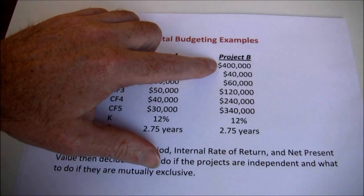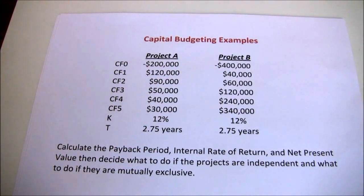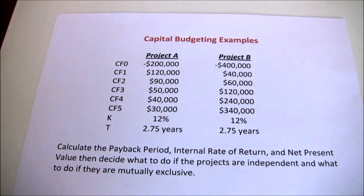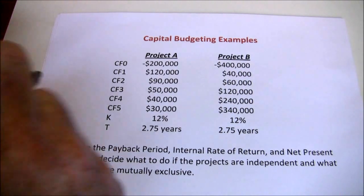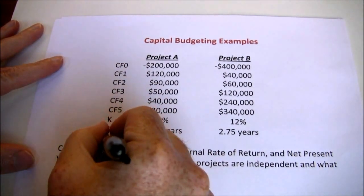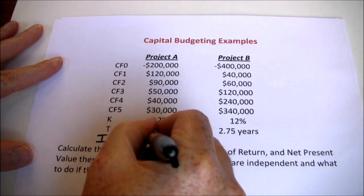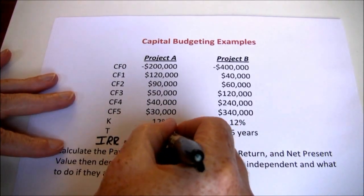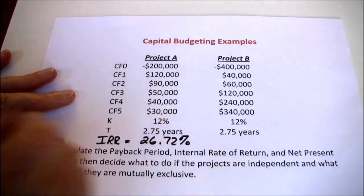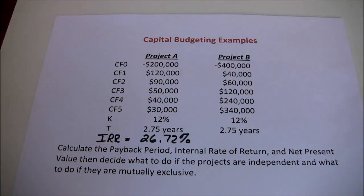Now we want to go to project B. Let me go ahead and write that down before I move on — 26.72%. Now for project B we'll go ahead and do the same thing.